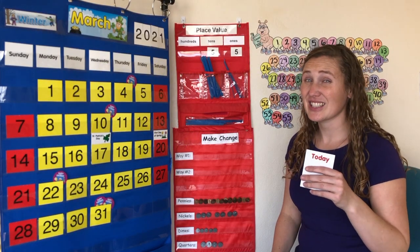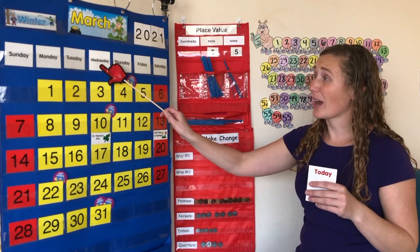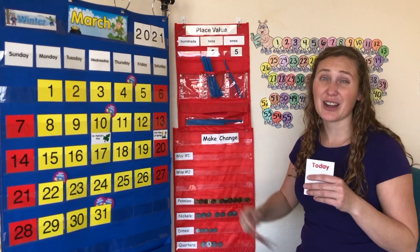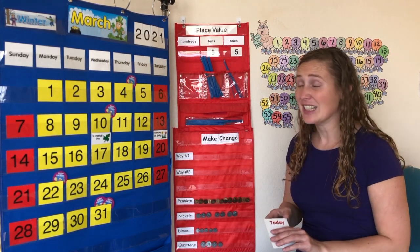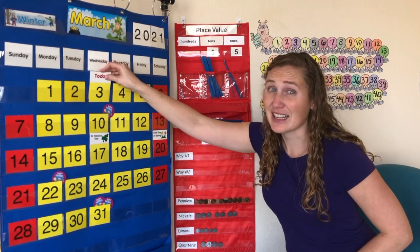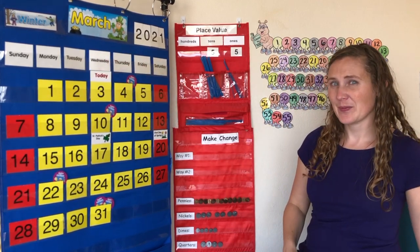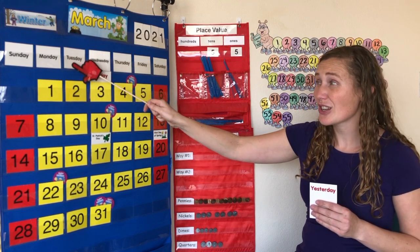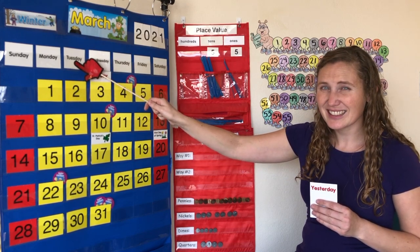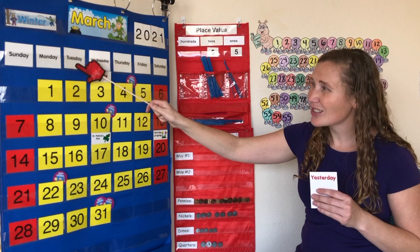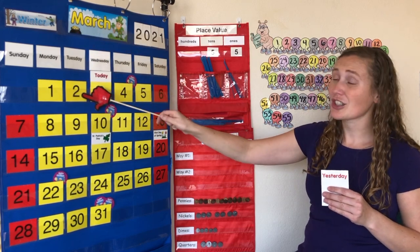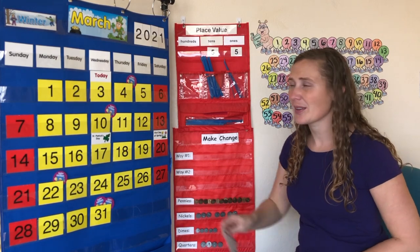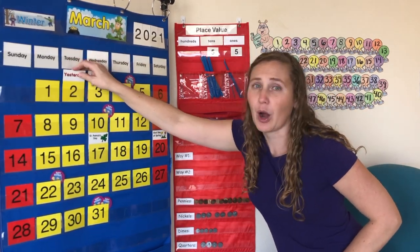Today is Wednesday, March 3rd, 2021. Do you know what yesterday was? The day before Wednesday is Tuesday. So yesterday was Tuesday, March 2nd, 2021.